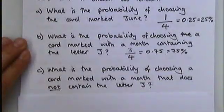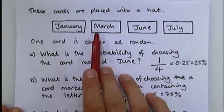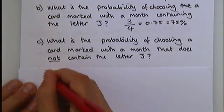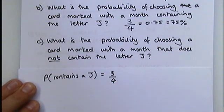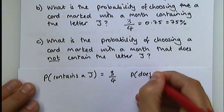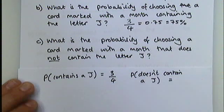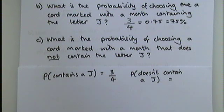The third question says, what is the probability of choosing a card marked with a month that does not contain the letter J? There are two ways that you can do this question. You can go back to the cards and say, look, there's only one which doesn't feature the letter J. Or you could just look at your previous answer. If you've worked out the probability that something contains the letter J as three quarters, the probability that it doesn't contain the letter J is simply going to be the other fraction which makes up a total. Because these two together makes a complete list. When you've got a complete list of outcomes, they will total up to one.